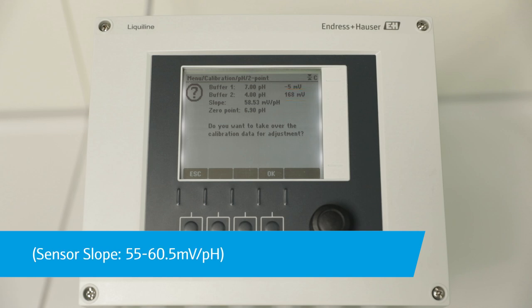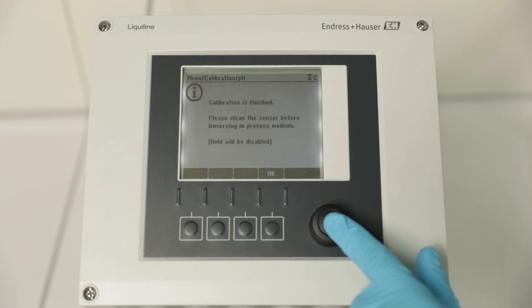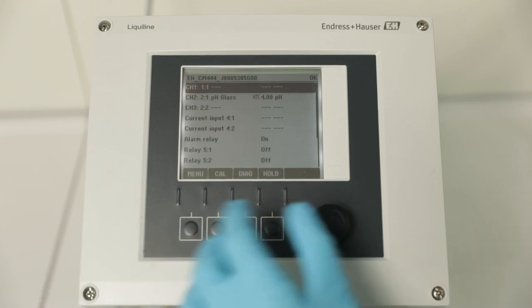The sensor slope should be between 55 and 60.5. If so, adjust the sensor by pressing OK two times and return to the measuring screen by pressing OK three seconds.